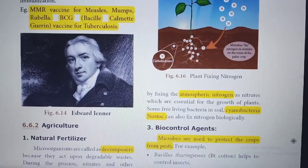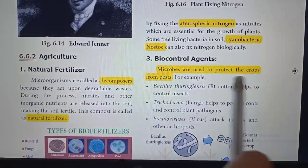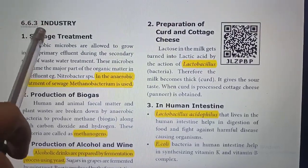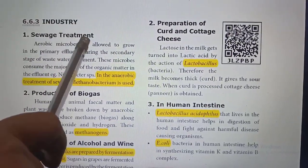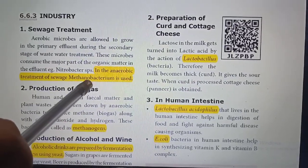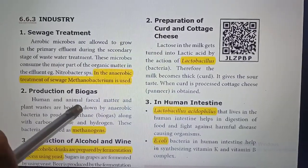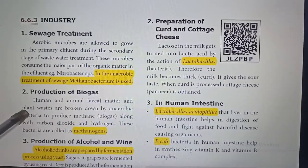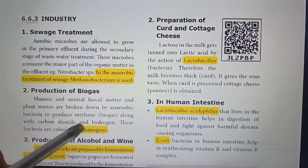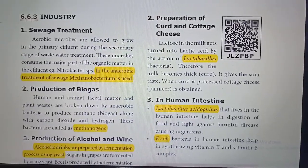Biocontrol agents: microbes are used to protect crops from pests. The next use is in industry — sewage treatment. In the anaerobic treatment of sewage, Methanobacterium is used. For production of biogas, human and animal waste matter and plant waste are broken down by anaerobic bacteria to produce methane gas, and these bacteria are called methanogens.